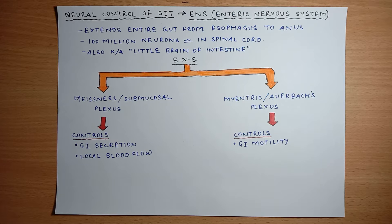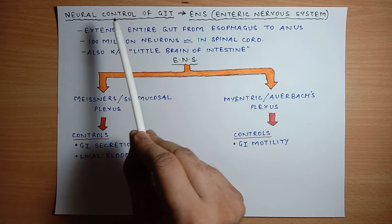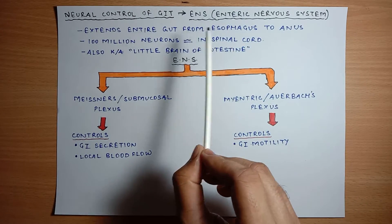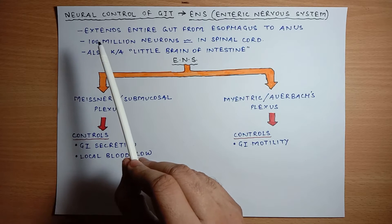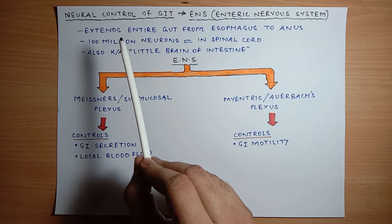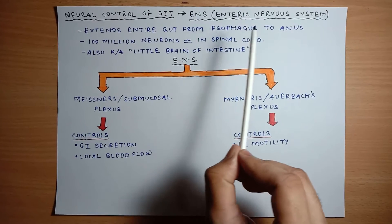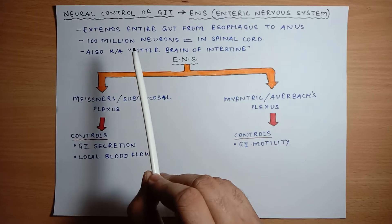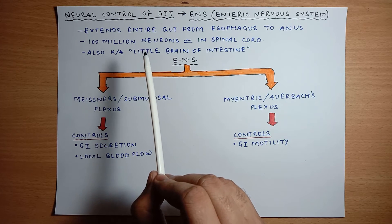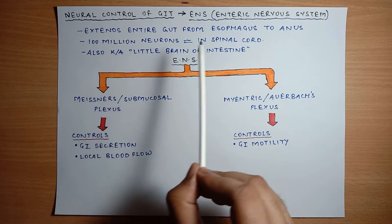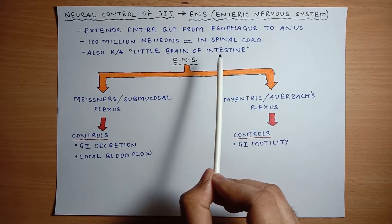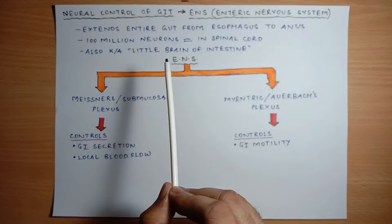The topic we are going to discuss in this video is the enteric nervous system. The enteric nervous system, or ENS, is the neural control of the GIT. It extends to the entire gut from esophagus to stomach. Total 100 million neurons are present, which is equivalent to the total number of neurons present in the spinal cord. This enteric nervous system is called the little brain of the intestine.